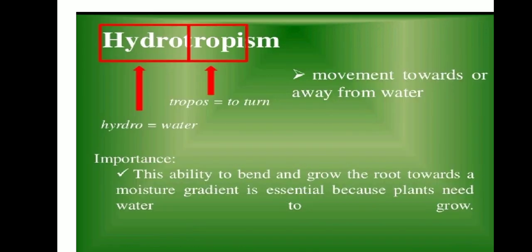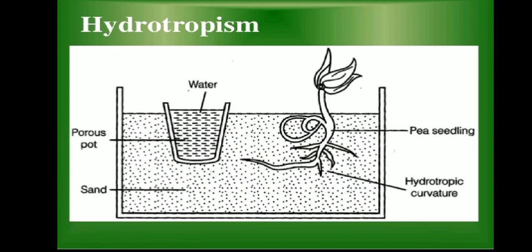Next, hydrotropism. Hydro means water, trophos means to turn. If a plant is growing towards water, it is called hydrotropism. The root part of the plant moves in search of water — this is hydrotropism, denoting positive hydrotropism. Naturally, the shoot part grows away from the water, denoting negative hydrotropism.